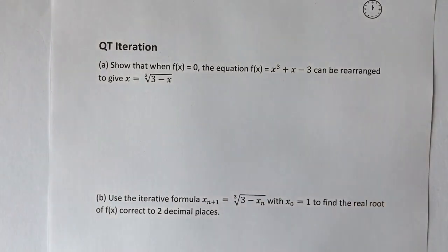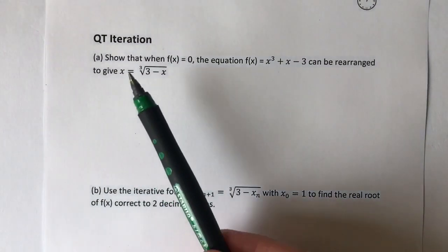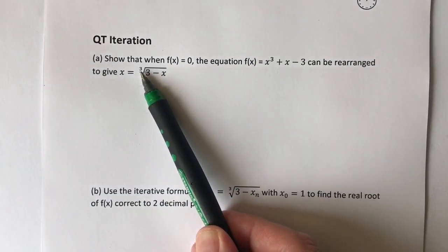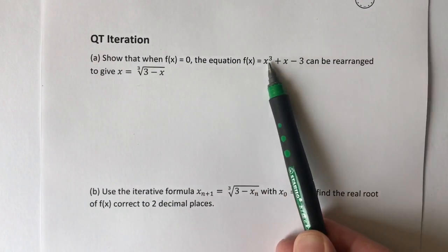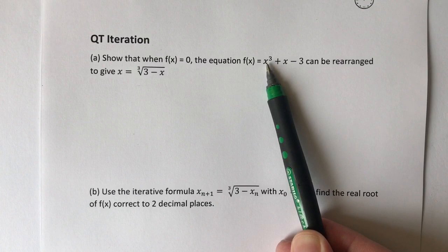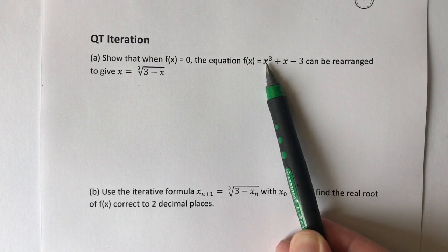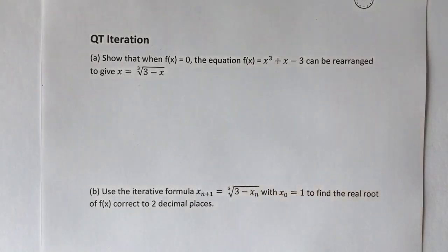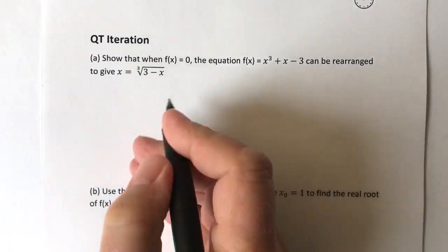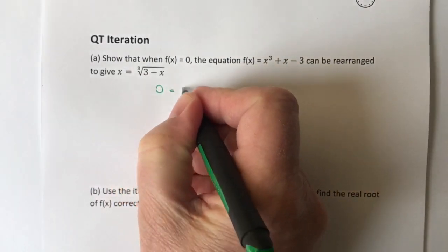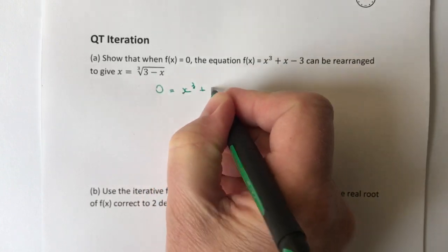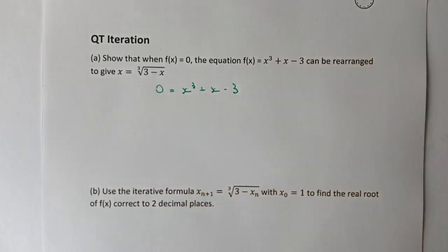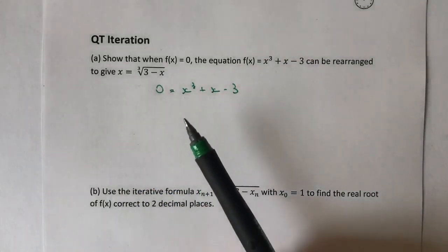Because we've got a cube root here, we're actually going to make this x the subject of the formula, because at the end we're going to be cubing both sides. That would give you this cube root. So basically, what we end up with is saying, well, if f(x) is zero, then zero equals x cubed plus x minus three.